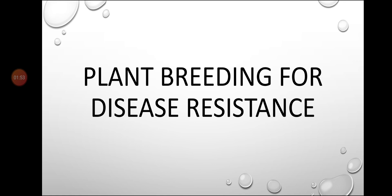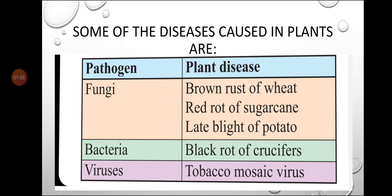Starting with the first topic: plant breeding for disease resistance. There are several diseases caused in plants — brown rust of wheat, red rot of sugarcane, and late blight of potato, which are caused by fungi. Black rot of crucifers is caused by bacteria, and tobacco mosaic virus is caused by a virus.